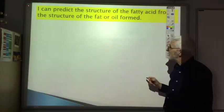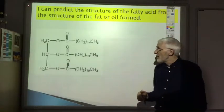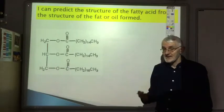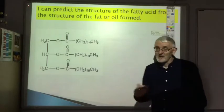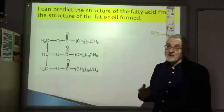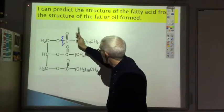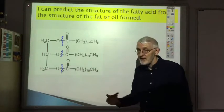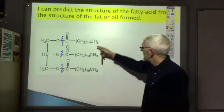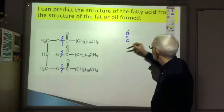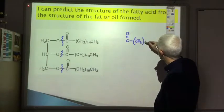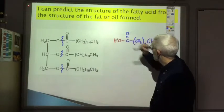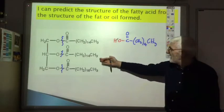I can predict the structure of the fatty acids from the structure of the fat or oil formed. Here's our oil or fat, and if they asked you to draw a structural formula of the fats formed by the hydrolysis of this, you'd do hydrolysis using either H plus ions or OH minus ions. Just like the hydrolysis of esters, you split the molecule there - one oxygen on one side, one oxygen on the other side. The side with the C double bond O will be the acid side, the other side will be the alcohol side. So if we just do this top one, the fatty acid would be - and we need to put that OH back on which we took off when we formed the ester. So there's our fatty acid. It'd be the same there and just slightly different here because it's got 16 instead of 14.